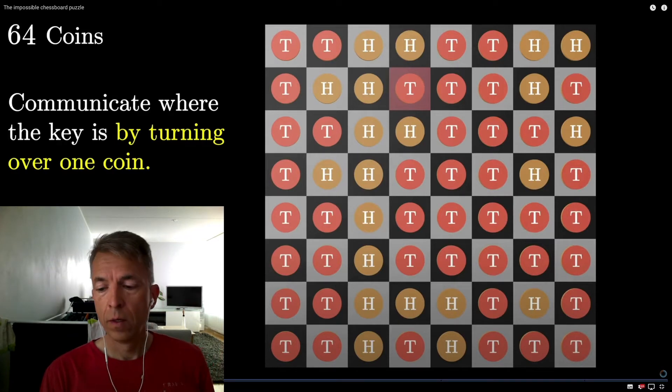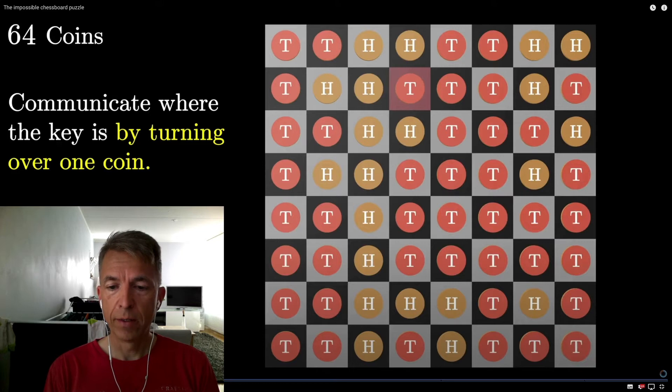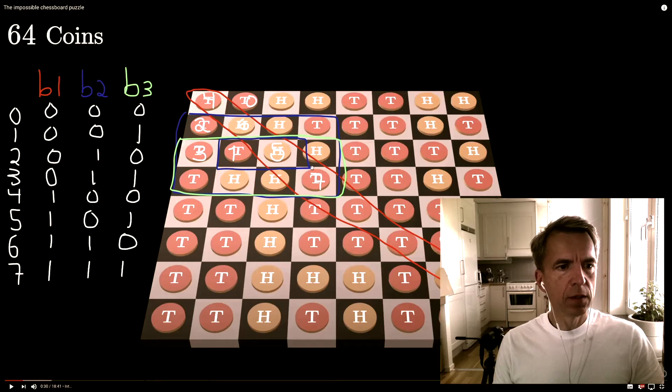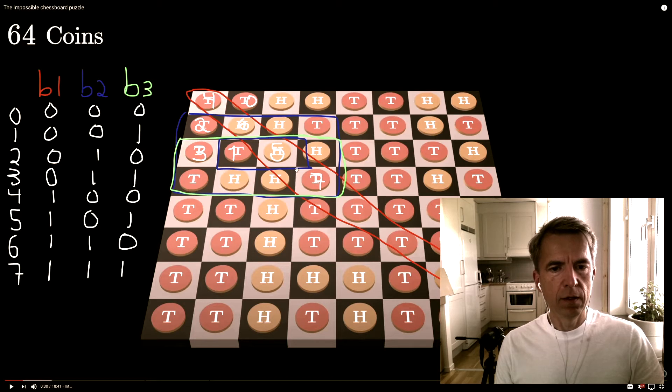Aha! So we can expand on this concept and try to divide the board into more areas and have prisoner number two count the number of heads within each area. And I did that for four areas in my last video. So if we want to have a zero zero zero flipping pattern, we can just flip this coin. Because then neither the red, green, or blue area are affected.